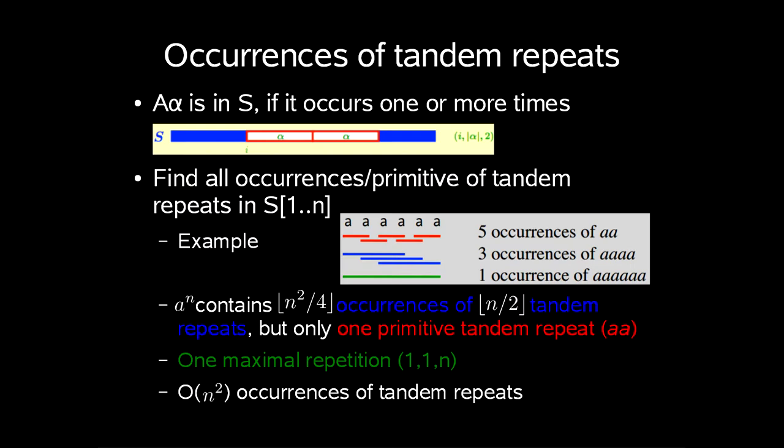In this simple example, the string of six a's have these three tandem repeats: five occurrences of aa, three of aaaa, and only one occurrence of aaaaaa.